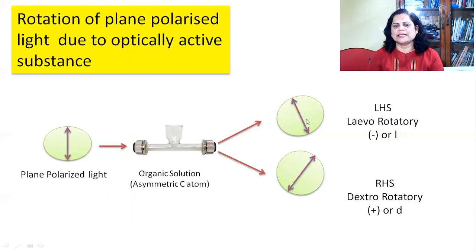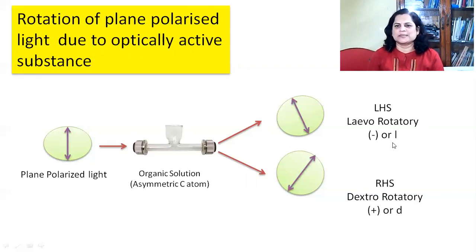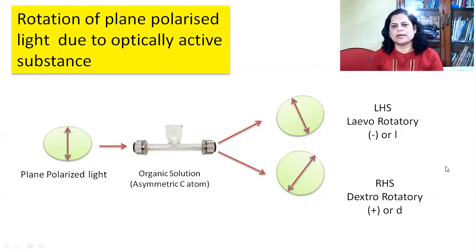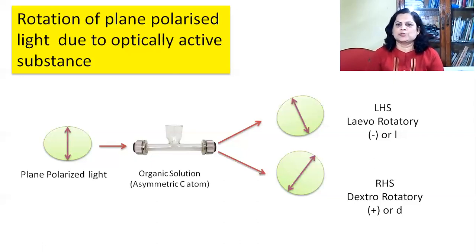When plane polarized light changes its direction towards the left side (LHS), that is called levorotatory. It is denoted by a negative sign or by the small letter 'l'. When the plane polarized light rotates towards the right side (RHS), that is called dextrorotatory. It is denoted by a plus sign or the small letter 'd'. So levorotatory rotates PPL to the left, and dextrorotatory rotates PPL to the right.